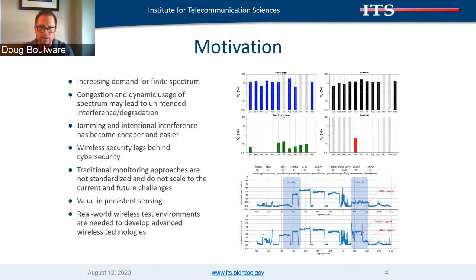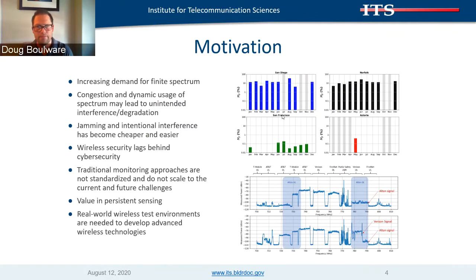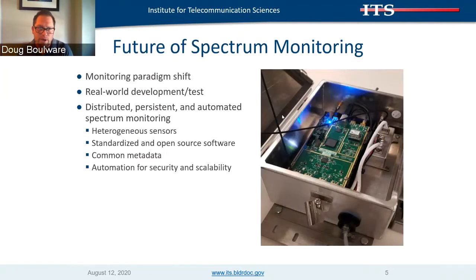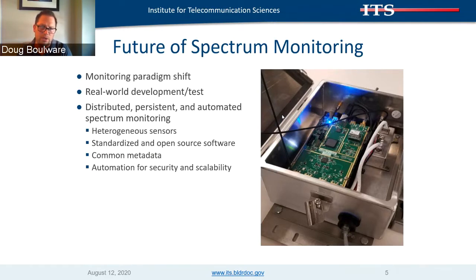Our experience over time has led us to the belief that to develop new monitoring capabilities and the broader suite of advanced wireless technologies, we need a real-world R&D environment to support that technology evolution. We're actively working to bring about a new future for spectrum monitoring — to fundamentally change the way we perform monitoring. We've established a real-world R&D environment known as the Boulder Wireless Test City, and we're using that environment to develop a distributed, persistent, and automated spectrum monitoring capability. This system is built upon heterogeneous sensors utilizing standardized and open-source software, providing common metadata, and using automation for security and scalability.